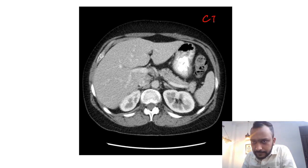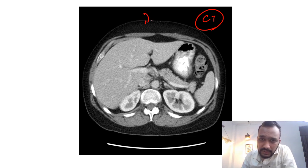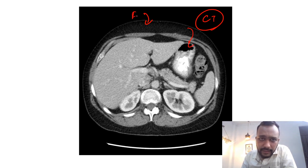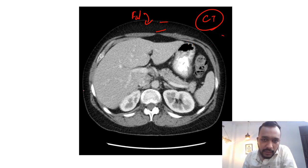Just remember there are two things which appear black on CT: one is your fat and the other is air. This is your subcutaneous fat which is appearing black, and the other is air which also appears black on CT.